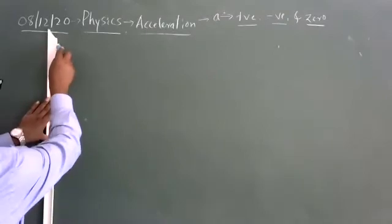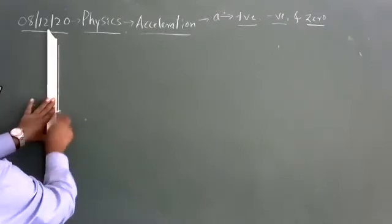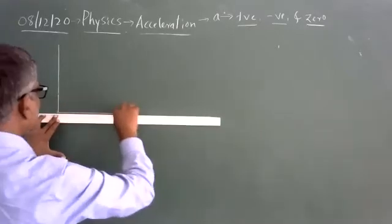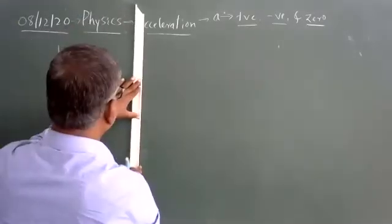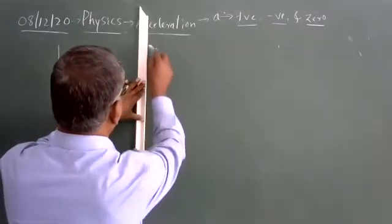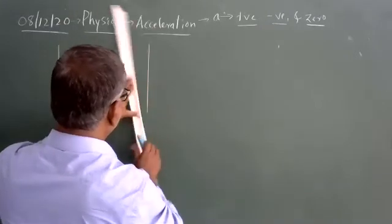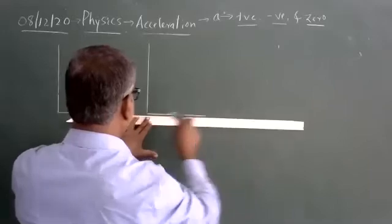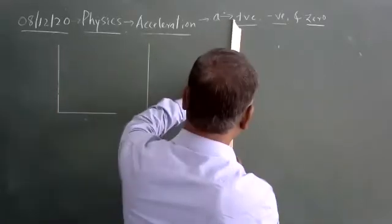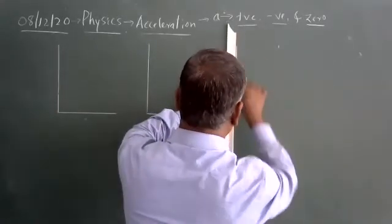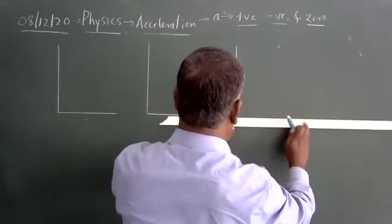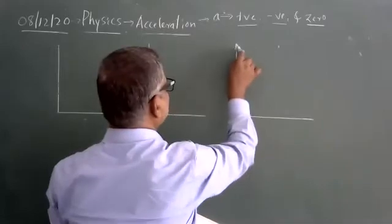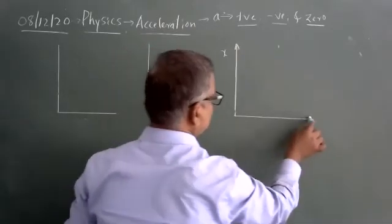Let me start with the first one. It is called an X-t graph and we have positive acceleration. Now, the third graph is, as I said, acceleration zero. All three graphs are meaningful graphs — they are all X-t graphs.